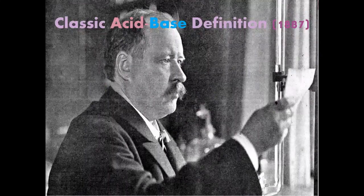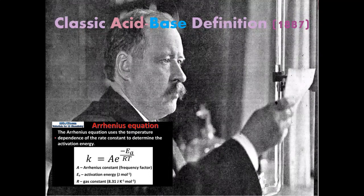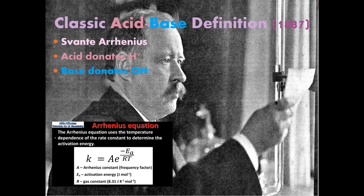Famous chemist number one came up with our classic definition. He's more famous for the Arrhenius equation, studied activation energy. He came up with the classic definition that most of us know: an acid donates hydrogen ion and a base donates hydroxide ion. The reason it's not perfect is that it assumes you're in water, because water is actually hydrogen and a hydroxide ion. If you were not in water—considering you and I are water-based—well, if we go to another planet, we need a better definition.